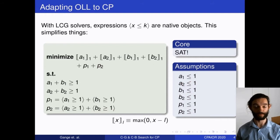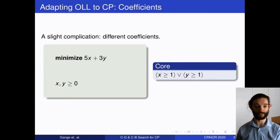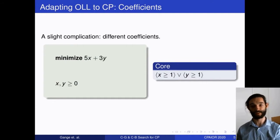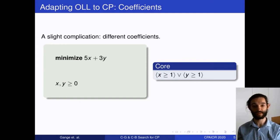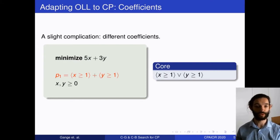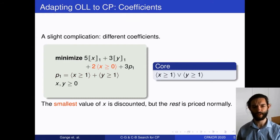There are complications when objective terms are weighted. If we have a core where x and y have different coefficients, we take the minimum of those coefficients and discount the value of x by that amount. The new penalty term covers x ≥ 1 or y ≥ 1 with a coefficient of 3, leaving a bit left for the first value of x. That's the core of applying OLL to CP.